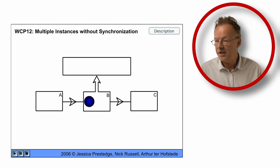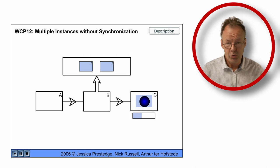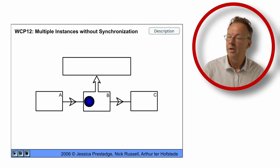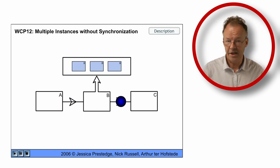In the next iteration B creates two instances. And in the third iteration B creates three instances.